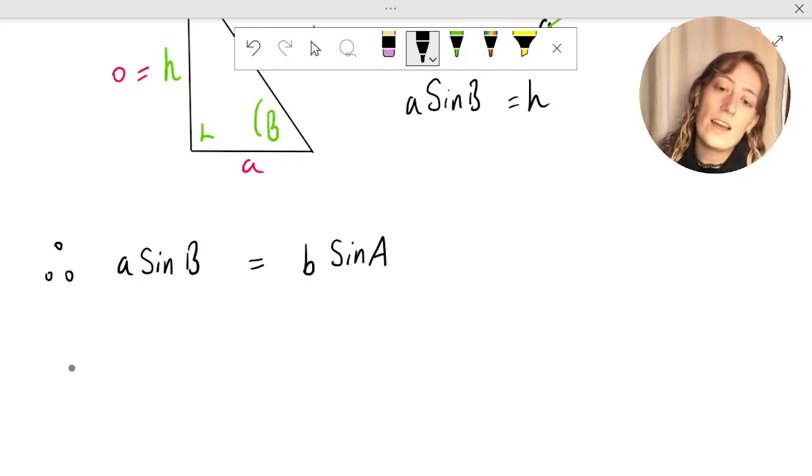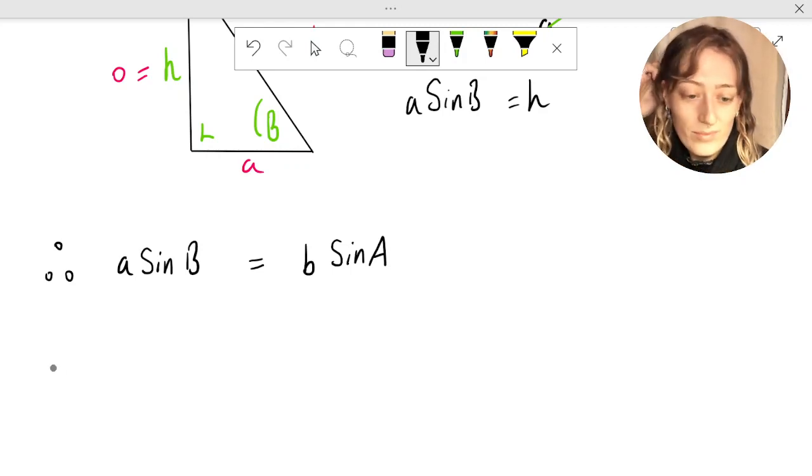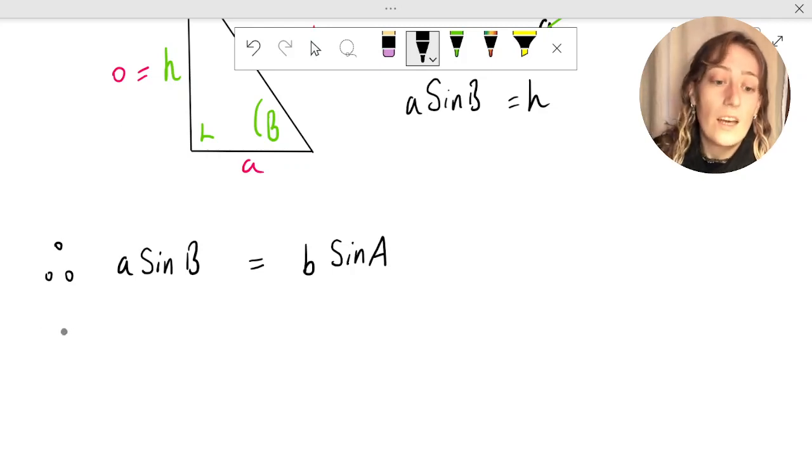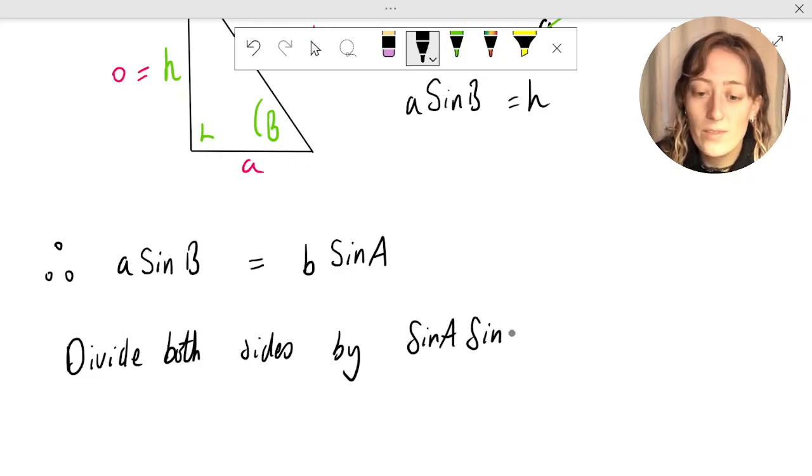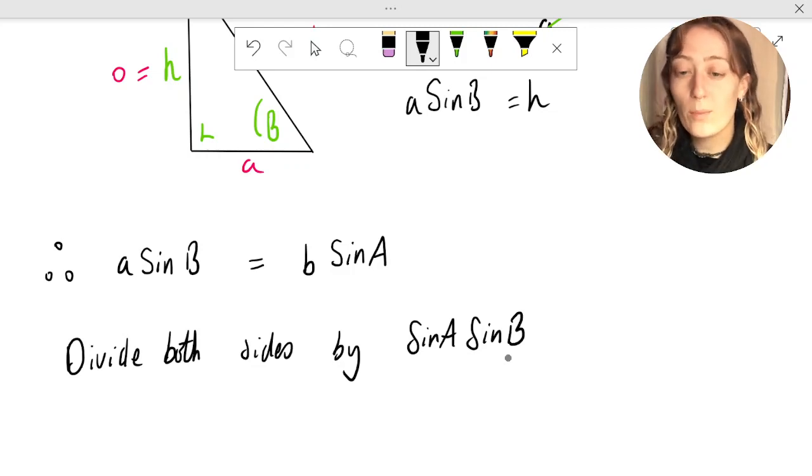The next thing I'm going to do, just to manipulate my equation a bit more - whatever I do to one side of the equation, I can do to the other, it's all perfectly allowed - I'm going to divide both sides by sine a times sine b. I invite you to pause the video and see how you get on with that. If you divide both sides, what can you simplify it down to?